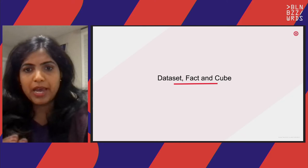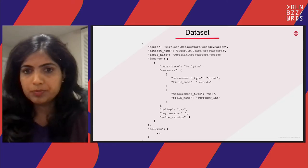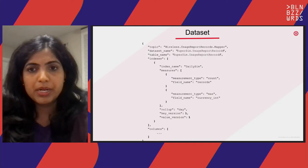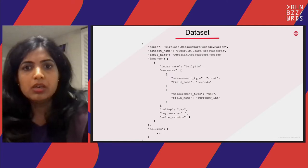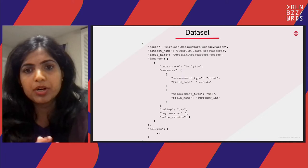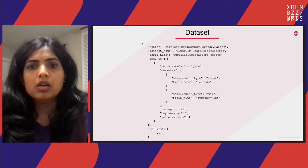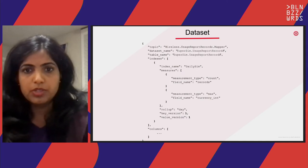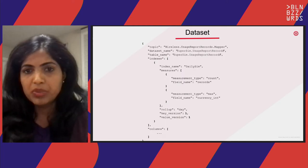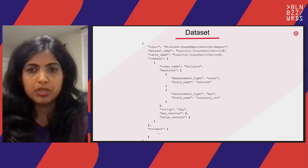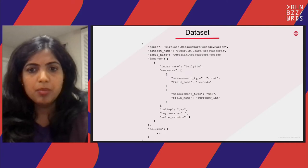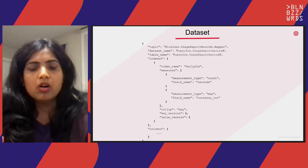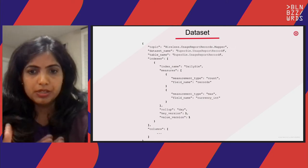We'll be looking at the dataset, fact, and cube for some background. You can think of a dataset as metadata about the data. For example, you define the incoming topic you'll be reading, the dataset name, and the table name where raw events will be stored. The main focus is indexes — what kind of measures do you need, like a count of records or a max on a currency int field. We also support day, minute, hourly, and weekly rollups, plus key version and value version, which are the schema versions of the Avro record of the incoming topic.